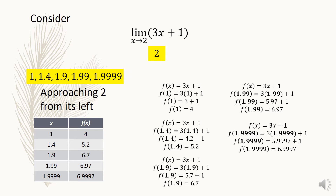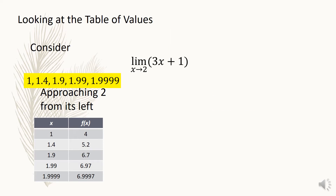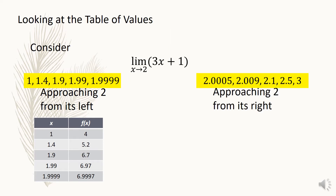Now, how about the values of x approaching 2 from its right? What do you think will happen? We will now use the values 3, 2.5, 2.1, 2.009, and 2.005. You have observed that the values approaching 2 from its right are getting closer and closer to a, which is 2.